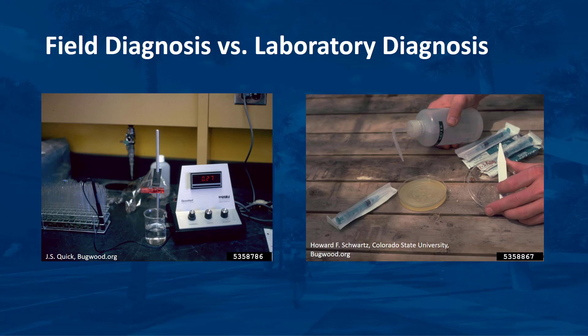If field and lab diagnoses do not agree, you must re-examine the problem to determine which diagnosis is more likely and whether the right sample received laboratory diagnosis. In some cases, you may need to start from the beginning, as neither field nor laboratory diagnosis may be correct.